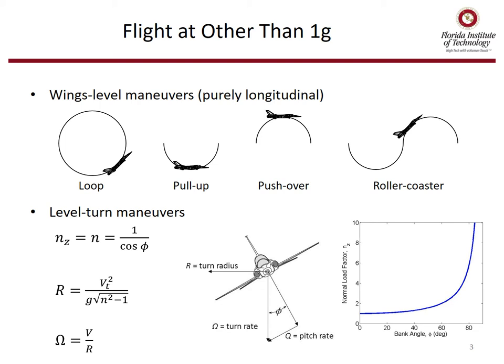Let's look at flight at other than 1G. If our wings are level to the horizon, then we can do a loop, we can pull up, we can push over, or we can do a combination of pull up and push over which is called a roller coaster. These are purely longitudinal maneuvers — the wings are level the entire time. But we can also get elevated G by doing level turns, where the load factor nz in a level turn is 1 over the cosine of the bank angle.